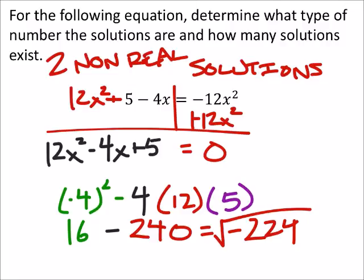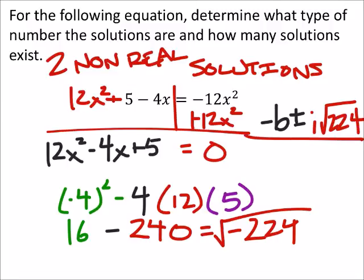So yeah, I mean, if we were to look at this in the actual quadratic formula, you'd have a negative b plus or minus, I guess I'm kind of simplifying this a little bit, i times the square root of 224 divided by 2a. I mean, it doesn't matter what b or a are. This just shows that we have two non-real solutions, one from the addition and one from the subtraction.